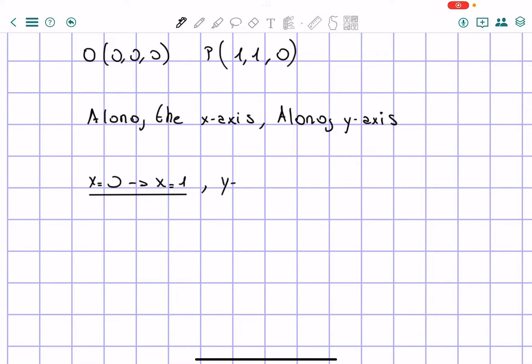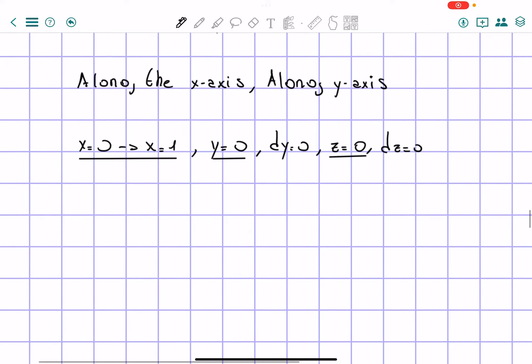And then I know that y is equal to 0, and of course, dy will be equal to 0. And then z is equal to 0, and then dz is equal to 0. Because during the movement, y does not change, it stays 0, and z as well does not change, it remains 0, because it's always along the x-axis.